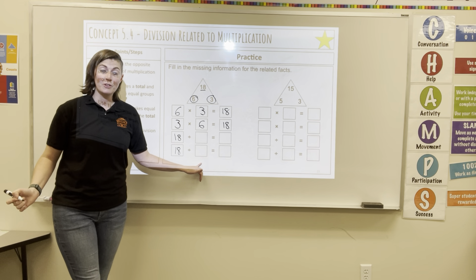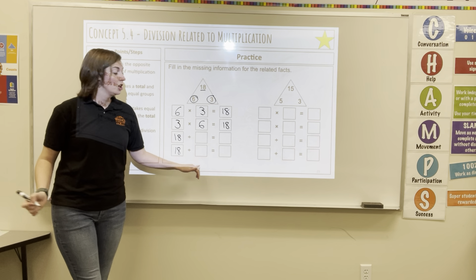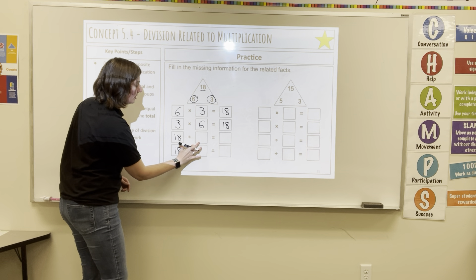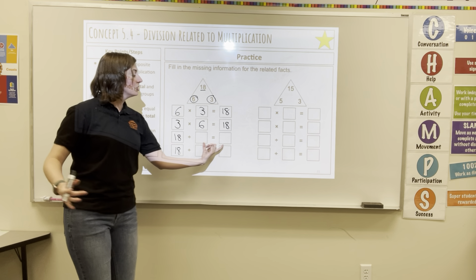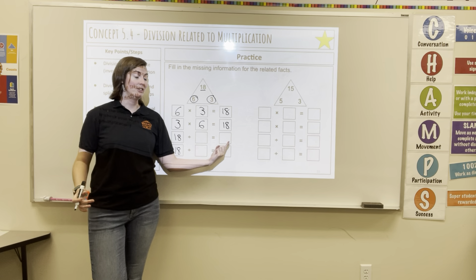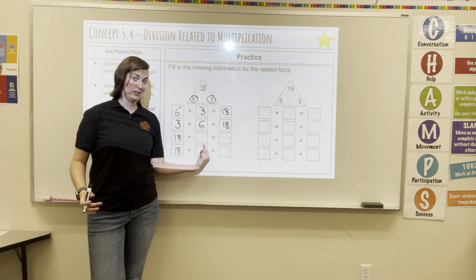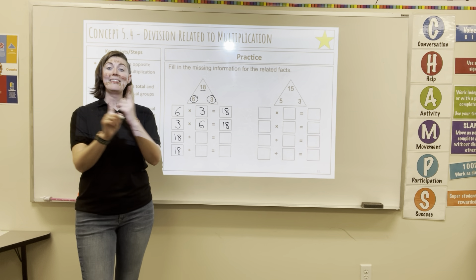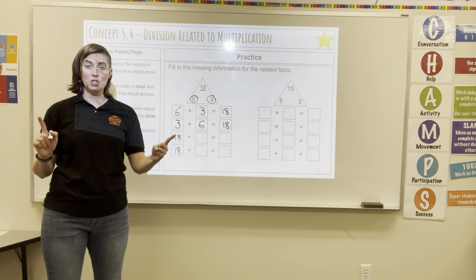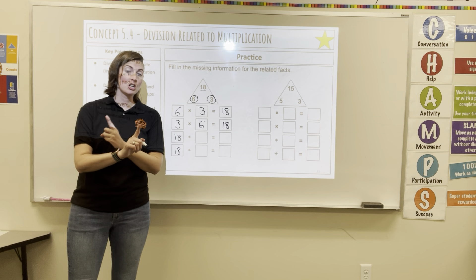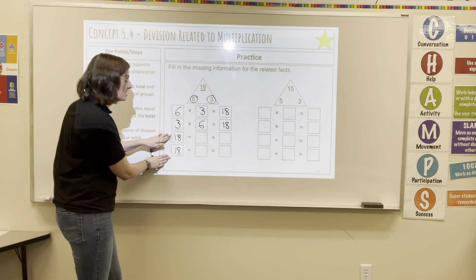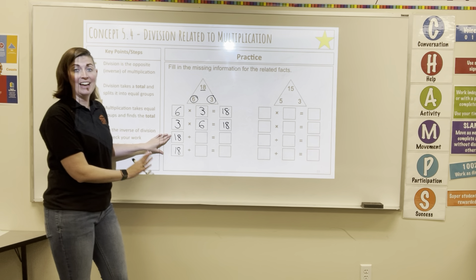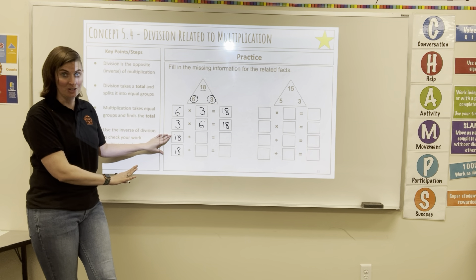But for division, you cannot switch these two around. You can switch your quotient and your divisor because the groups and the amount in each group can be changed, but you still have to start with that total when you're dividing.